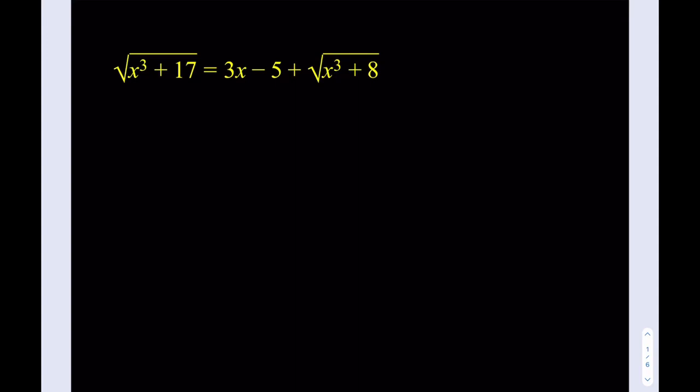Hello everyone. In this video we're going to be solving a radical equation. We have the square root of x cubed plus 17 equals 3x minus 5 plus the square root of x cubed plus 8. We're supposed to solve for x. At this point if you want, go ahead and pause the video and give this problem a try. Alright, let's get started.